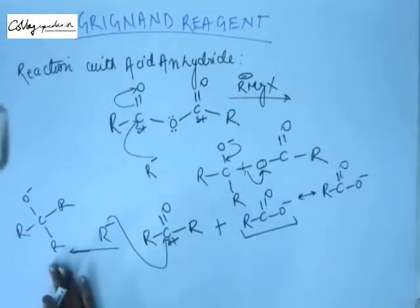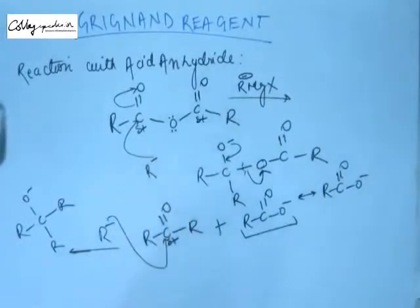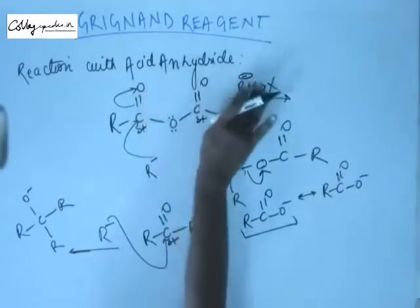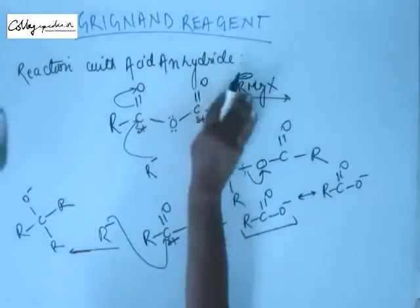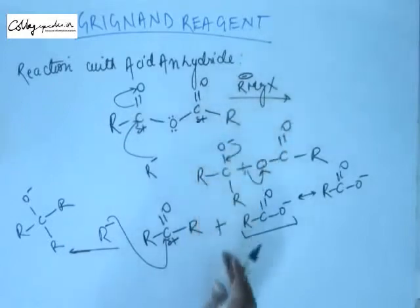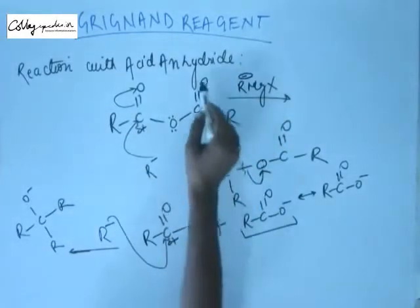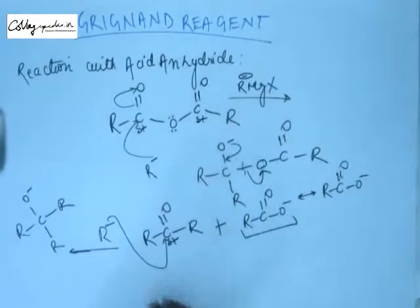The reaction is the same as we had in case of acyl chloride and ester — the same will be the reaction for acid derivatives. In acyl chloride we have chlorine as the leaving group, in ester we had OEt or OR in general as the leaving group, and in the case of acid derivatives we will have the carboxylate ion as the leaving group. All three of them will consume two equivalents of Grignard reagent.